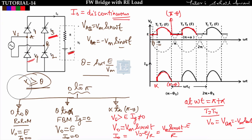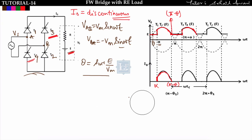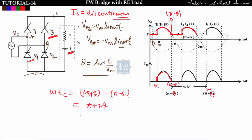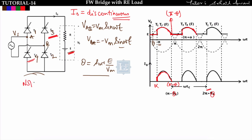To find the circuit turn-off time: we check for how long the thyristor is in reverse bias. Thyristor T1 conducts from α to π−θ. After π−θ, T1 goes into reverse bias, and it remains in reverse bias until 2π+θ. Therefore, the angle for which T1 is in reverse bias is: ωtc = (2π+θ) − (π−θ) = π + 2θ. So circuit turn-off time = (π + 2θ)/ω.